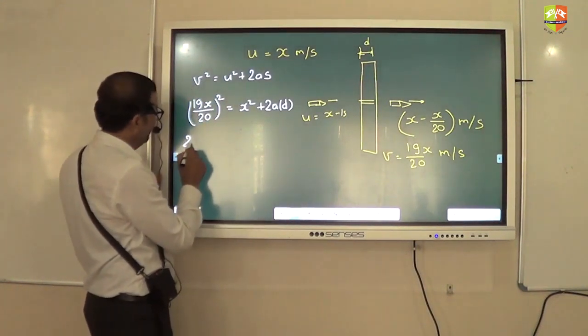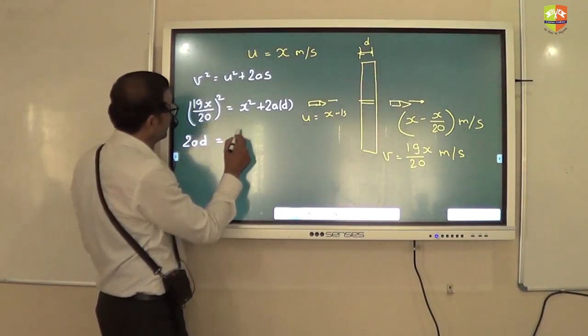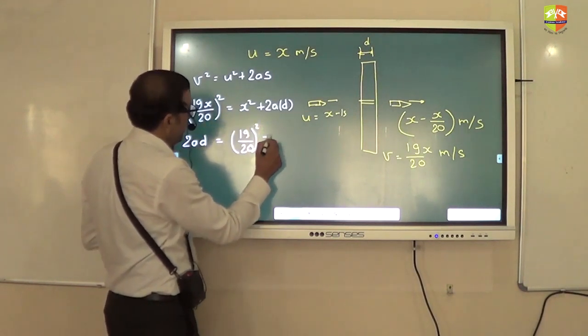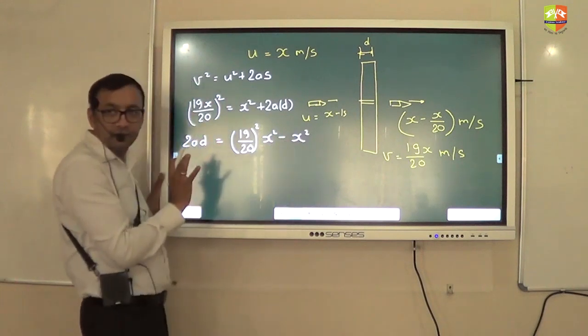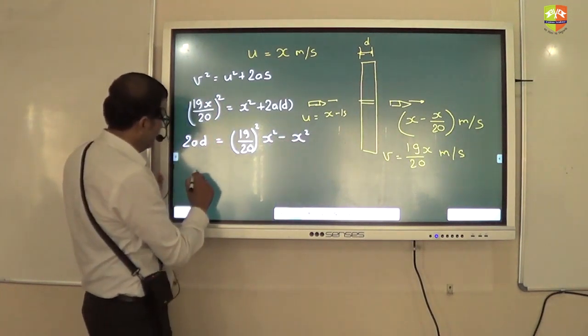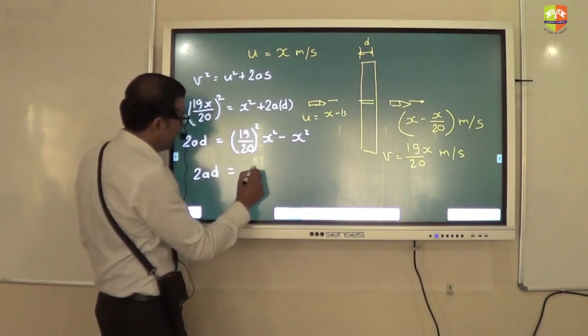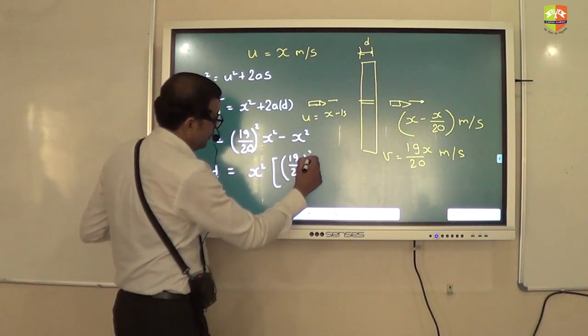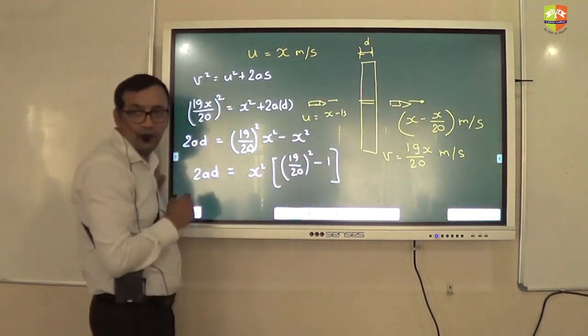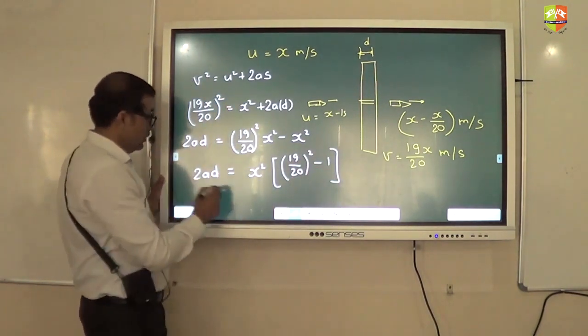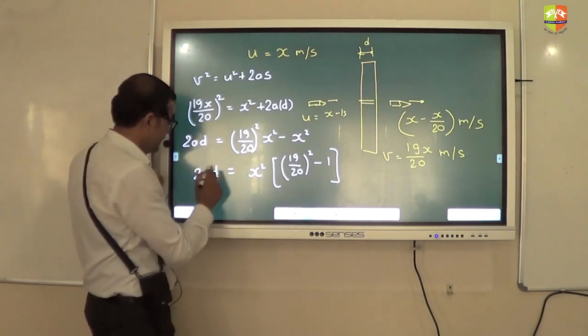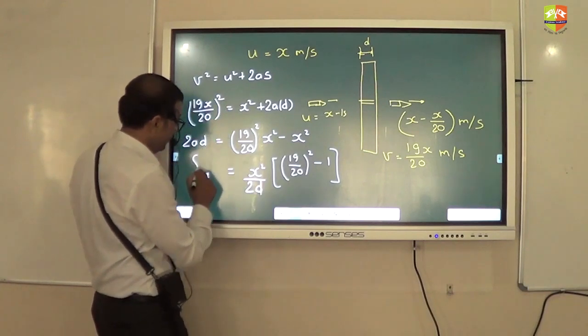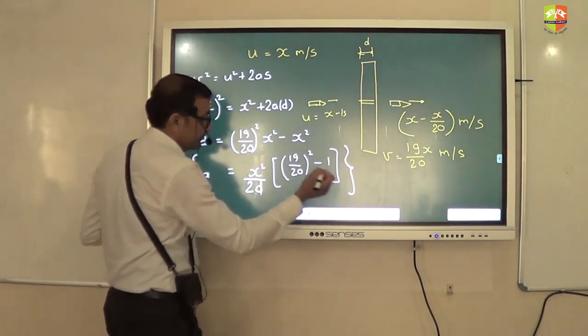Yeah, it will be common. Anyways, let me do it. Write down all these steps. It will be 19 by 20 whole square x square minus x square. Is that right? Okay? So 2ad. Now I take x square common. It will be 19 by 20 whole square minus 1. Understood? So acceleration is x square by 2d. This is your acceleration. Got it?